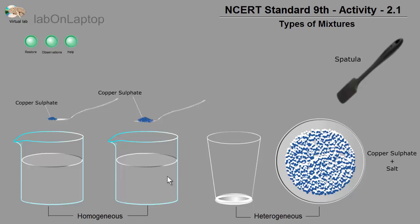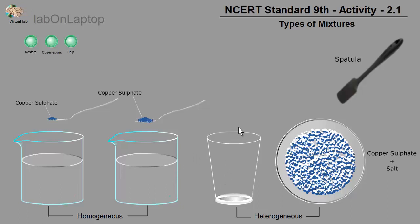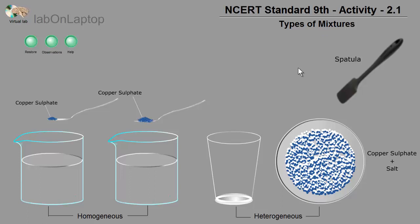What are the features that we are showing in this chapter? In that chapter, the first activity is 2.1, and the activity's name is 'Types of Mixture.' Here, we are going to check 2 mixtures.